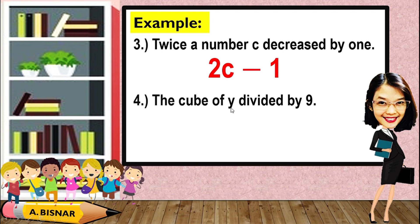Next, the cube of y divided by 9, which can be written as y cubed over 9. This is an example of an algebraic expression because it is a combination of a number and a variable, and the present operation is division.